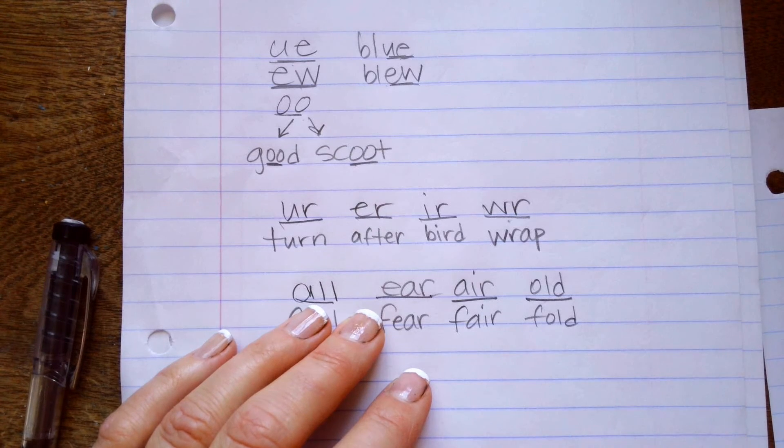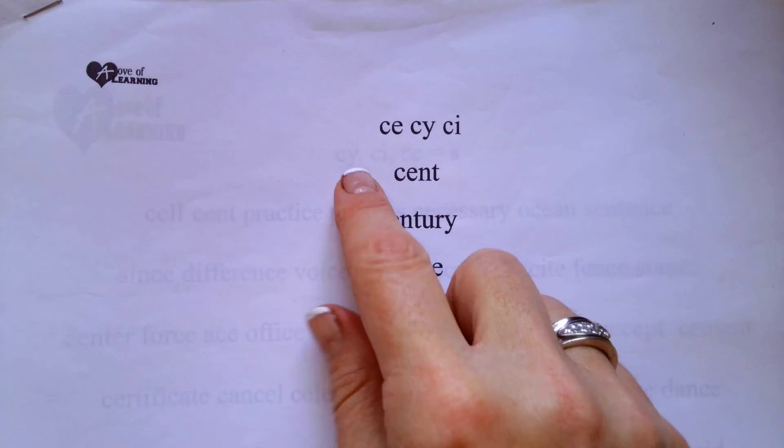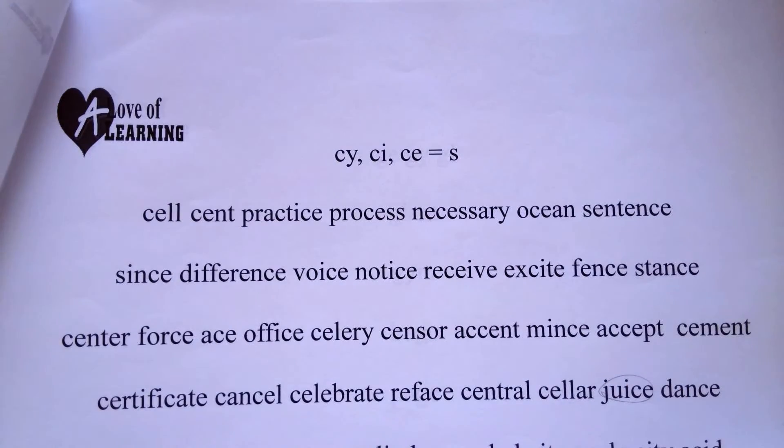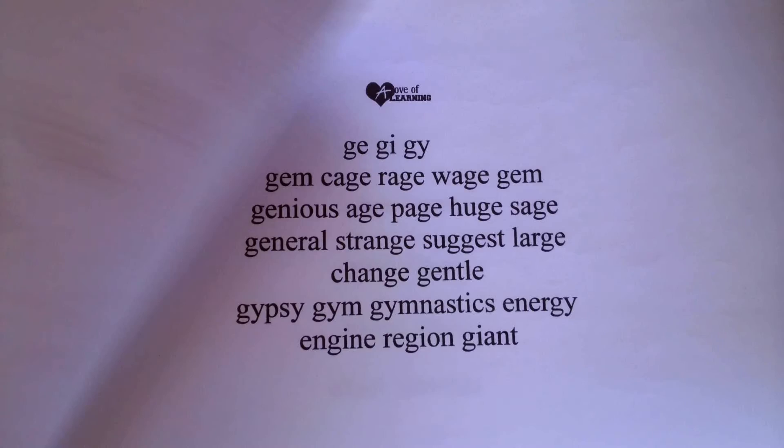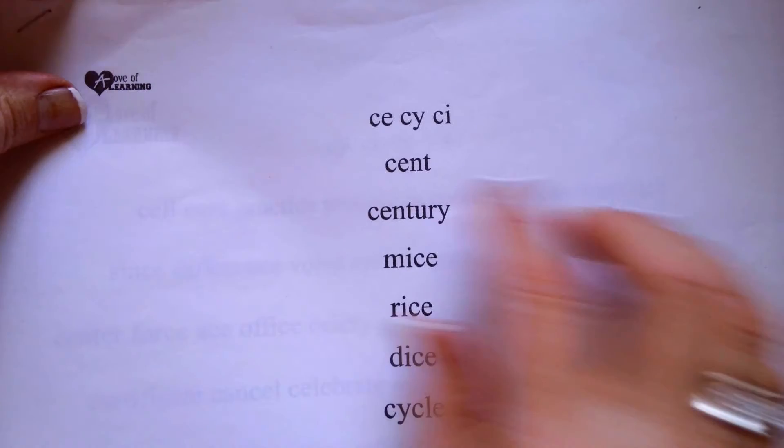you would just look at the sound and say what it is. So you would say ss, ss, juh, juh, wuh. Instead of having to read it, you would just name the sounds for your old blends.